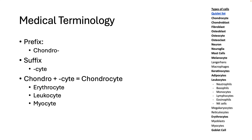There are a bunch of different '-cytes' on this list, and if you know the prefixes for them, they're really easy to remember. 'Erythro' means red, 'leuco' means white, and 'myo' means muscle. So erythrocyte is a red blood cell, leucocyte is a white blood cell, and a myocyte is a muscle cell.